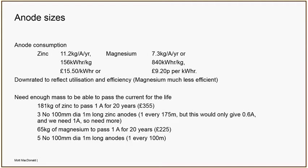For magnesium, the Faraday equation gives you 7.3 kilograms per amp per year, which works out at 840 kilowatt-hours or about £9.20 per kilowatt-hour. But anodes don't work at 100% — none of us do — so there is a utilization factor reflecting how much of the anode can still corrode; there's always a bit left that can't do anything. We also downrate it for efficiency. For magnesium specifically, it wants to corrode really badly, so some of the current it develops goes towards self-corrosion rather than protecting the pipe. Then we basically size it so that we've got enough mass to pass the required current for the full design life.